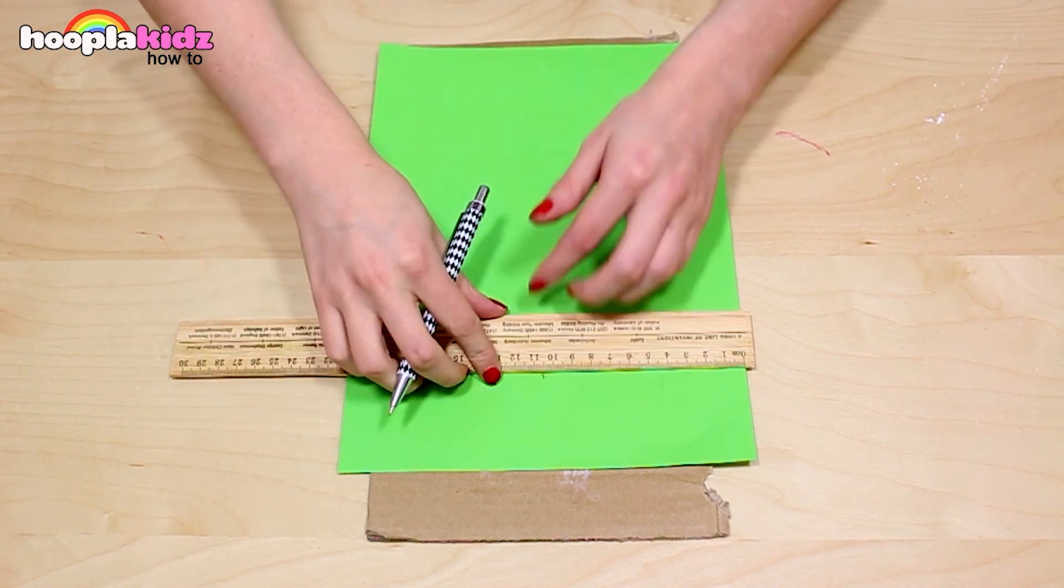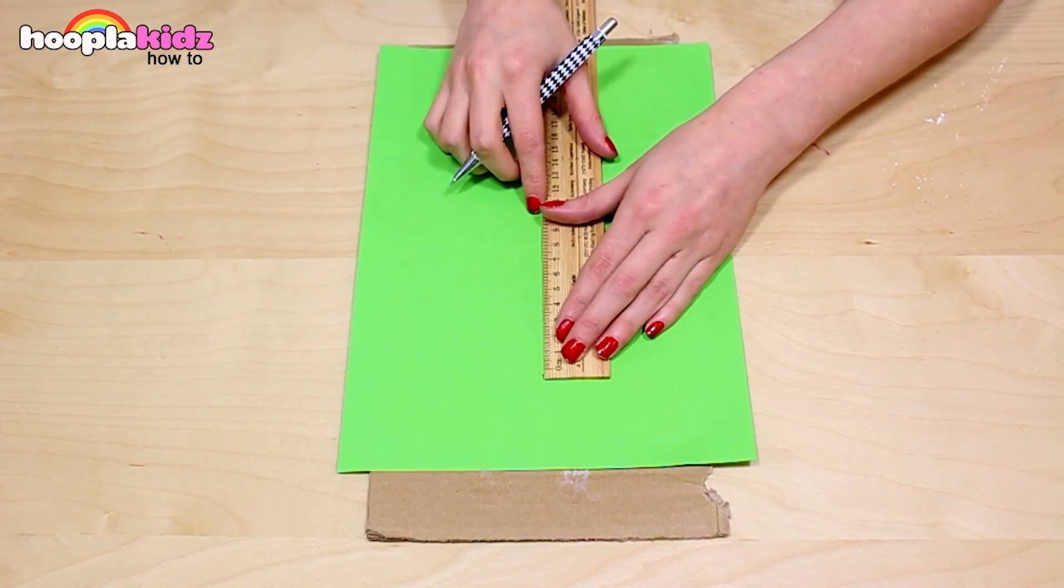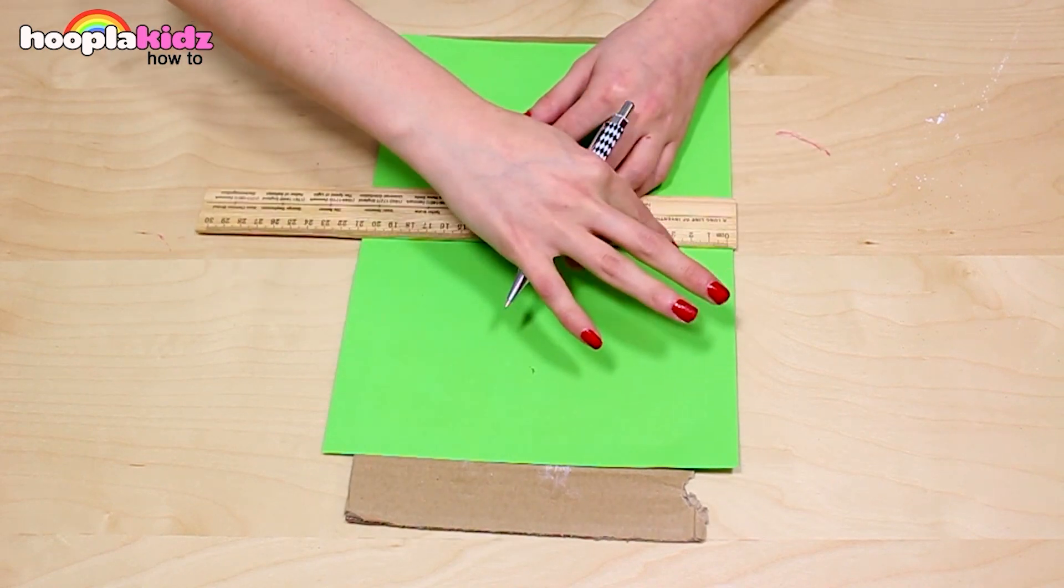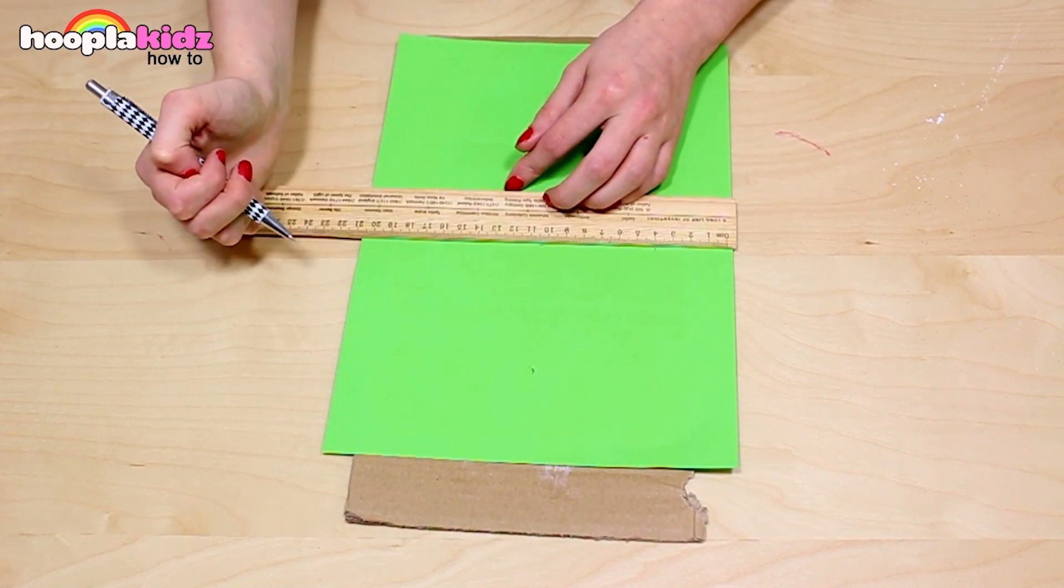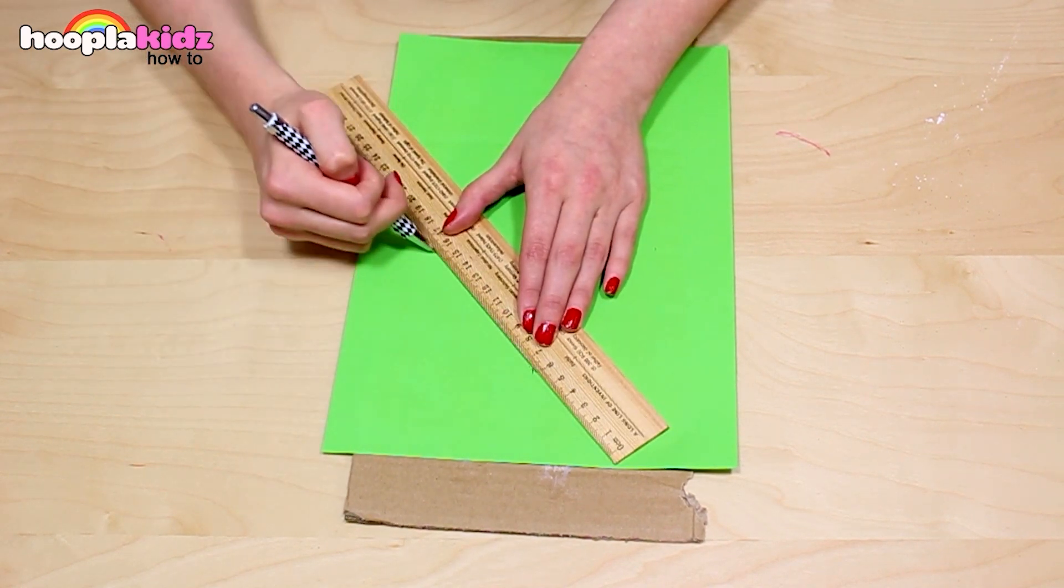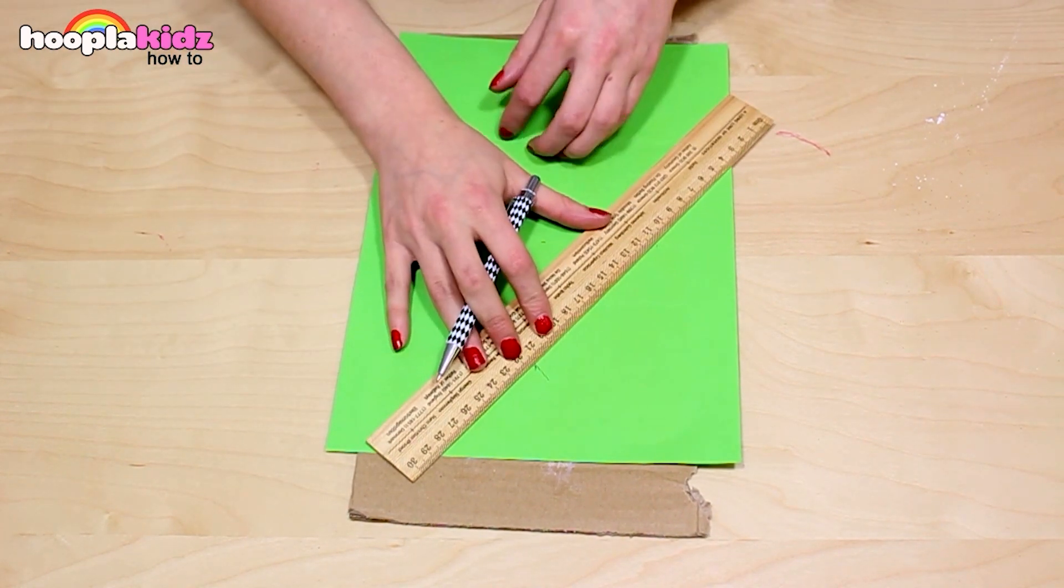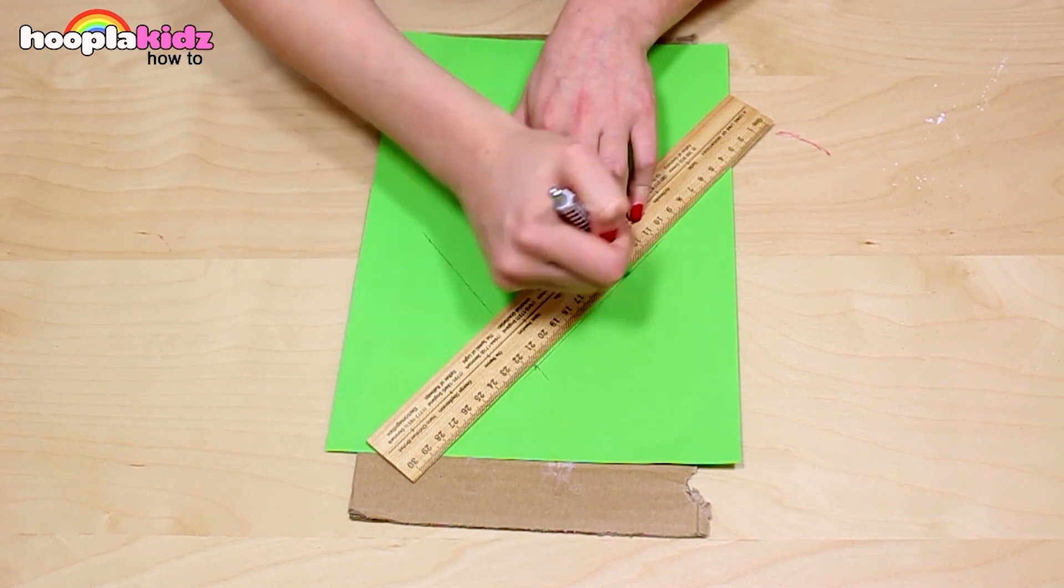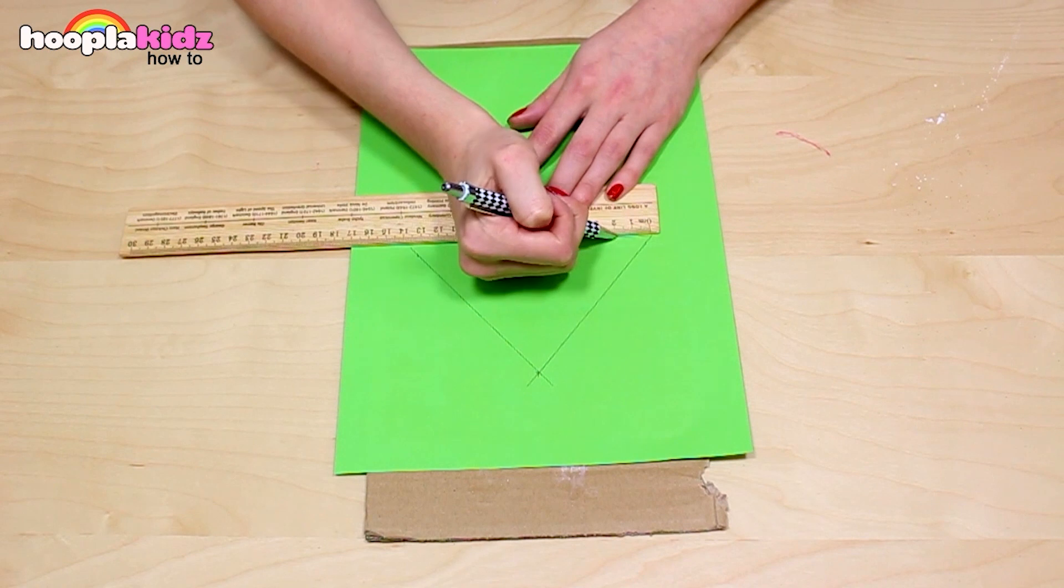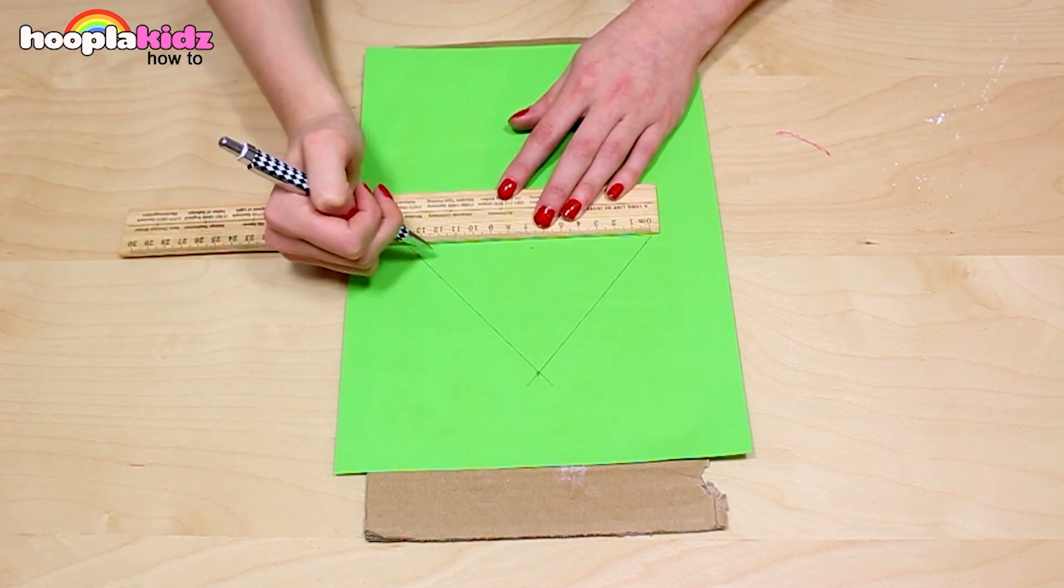I'm now going to use my ruler to draw an outline of a Christmas tree. Looking good! You can get your parents' help to do this if you like.